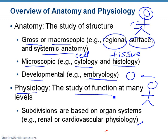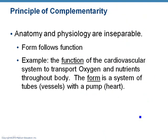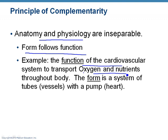When we talk about physiology, we usually divide it into organ systems — cardiovascular physiology, renal physiology, things like that. When we talk about A&P, anatomy and physiology, we always put them together — they are inseparable. Form always follows function. For example, the function of the cardiovascular system — your heart and blood vessels — is to transport oxygen and nutrients throughout the body. The form is tubes and vessels. So arteries, veins, and a heart as a pump — the form follows the function.